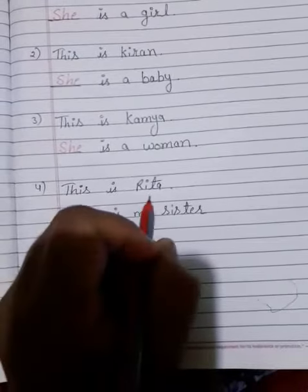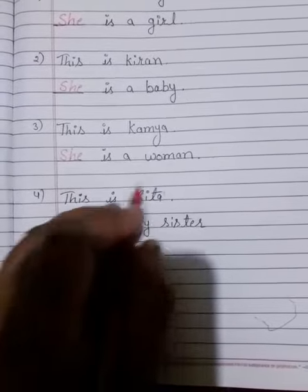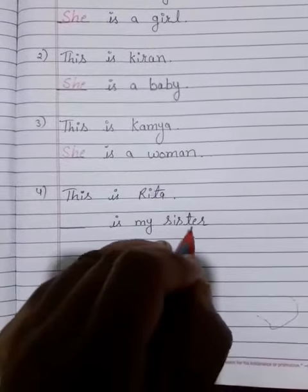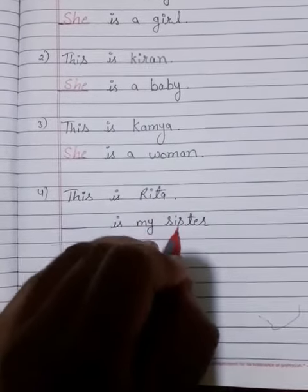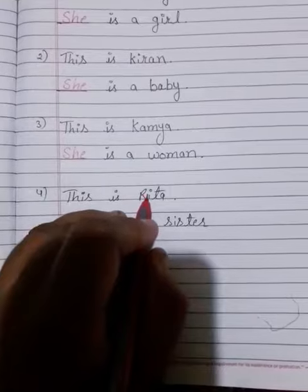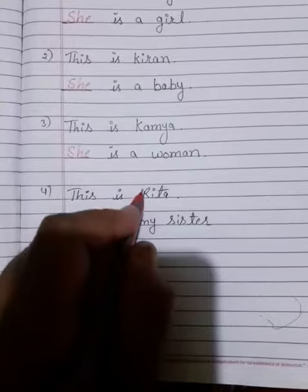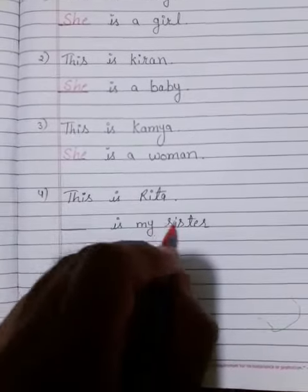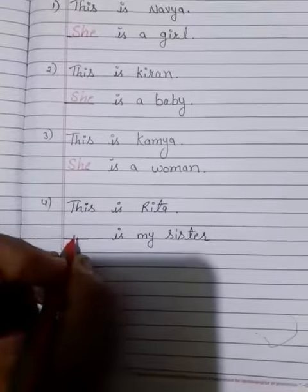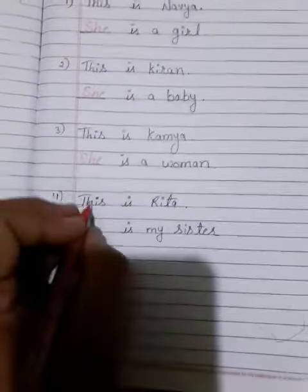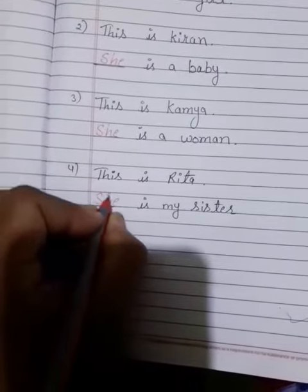This is Rita. Das is my sister. Ab Rita aur sister — ye do female words hain. Ye female ke liye use kiye jaate hain. Rita ek ladki ka naam hai; kisi boy ka naam Rita nahi hoga. Rita aur sister, dono female words hain. Isliye she. She is my sister. S-H-E, she.